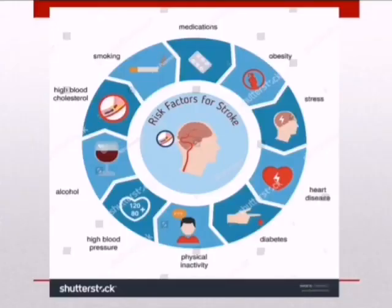Here we have the modifiable risk factors. If we control these factors, we decrease the risk of stroke recurrence. These include hypertension, which is the major modifiable risk factor, followed by diabetes, coronary artery disease, hyperlipidemia, obesity, sedentary lifestyle, stress, medications like oral contraceptive pills or hormones, smoking, and alcohol.